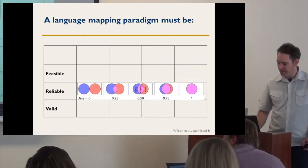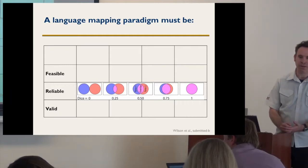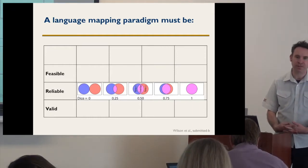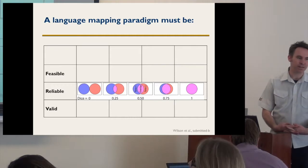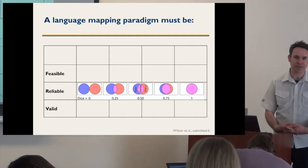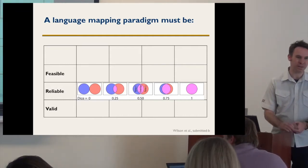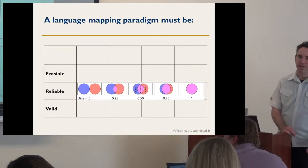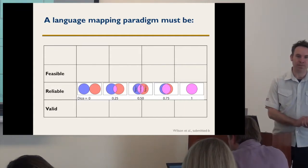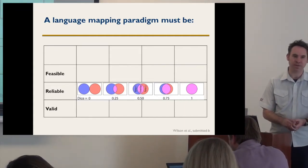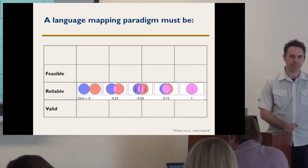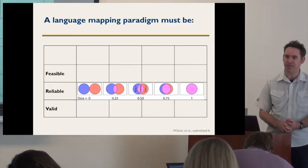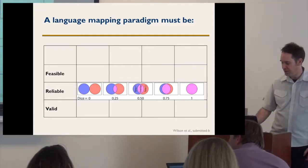Third, it needs to be valid — it needs to actually identify language areas and not other areas. Many tasks have sensory, motor, and executive components, but what we really want is to identify language regions. We know two things about language regions in non-impaired speakers that can serve as touchstones for validity: language is lateralized to the left hemisphere — you get aphasia from left hemisphere strokes, not right hemisphere strokes. And we know that left frontal and left posterior temporal regions are involved in language in essentially all neurologically normal people. If your paradigm can demonstrate those two things, you have some basis for its validity.